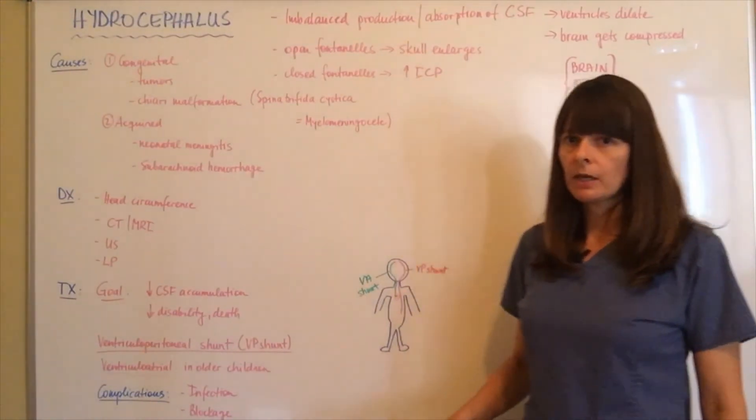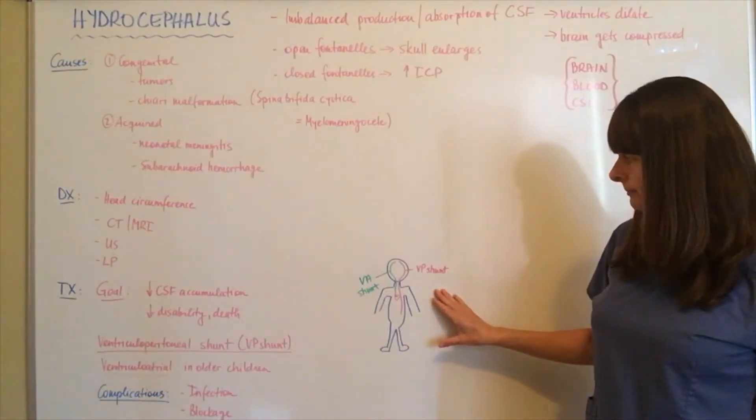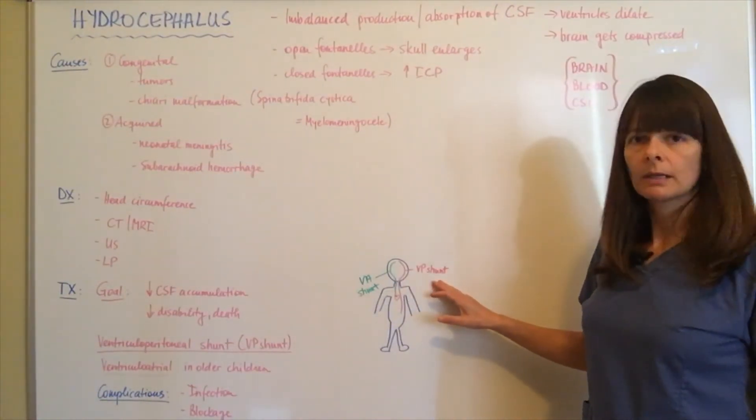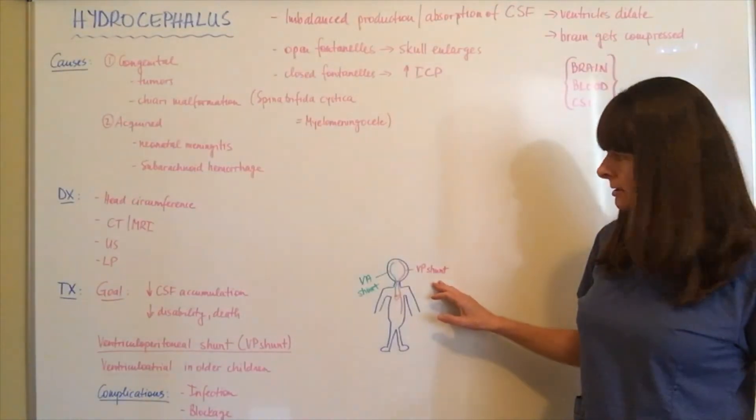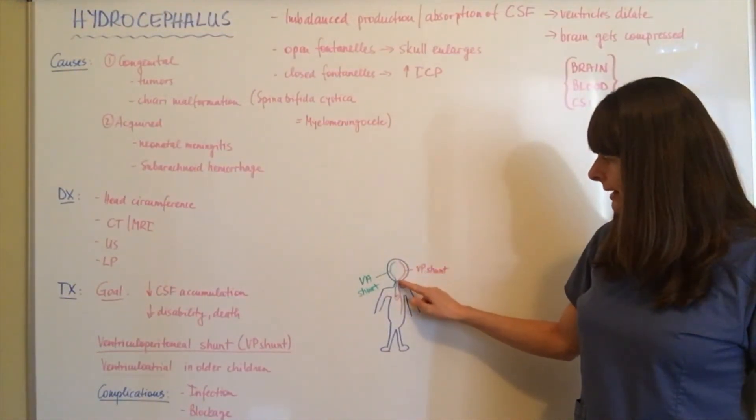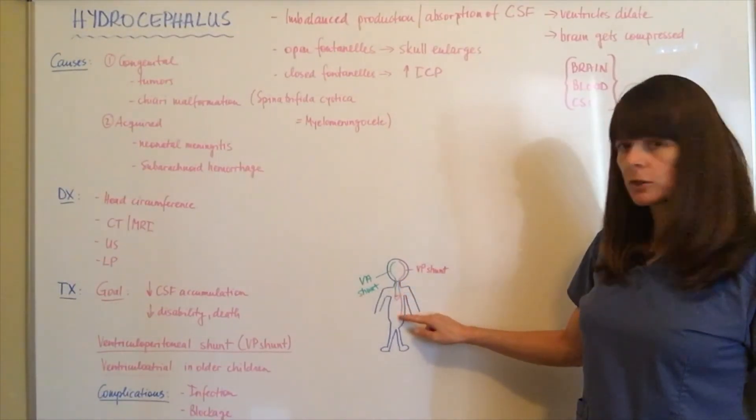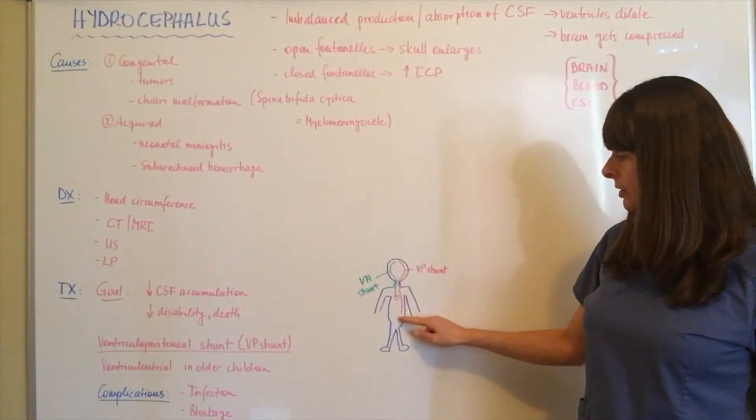Bear with me here—I'm not the greatest drawer—but I drew out our child here. The VP shunt basically means there's a tube placed inside the ventricle of the brain that's then threaded down through one of the blood vessels of the neck all the way down into the abdomen.